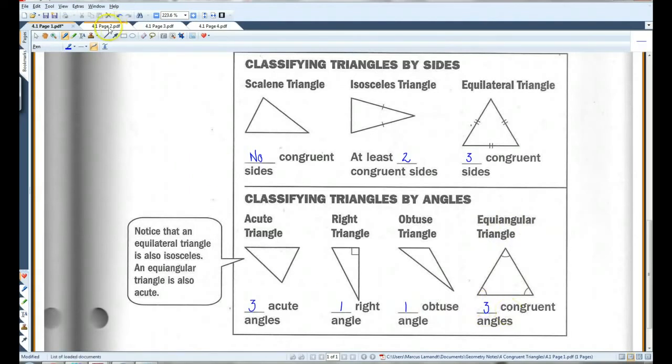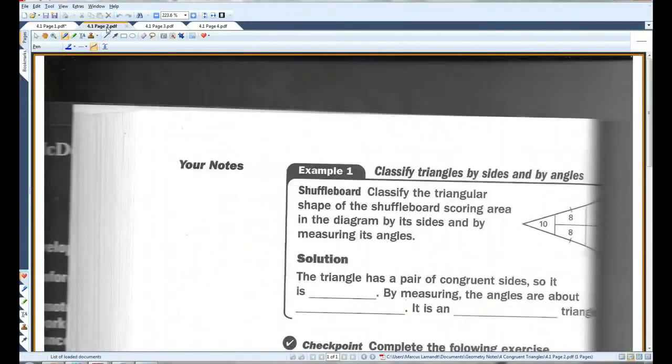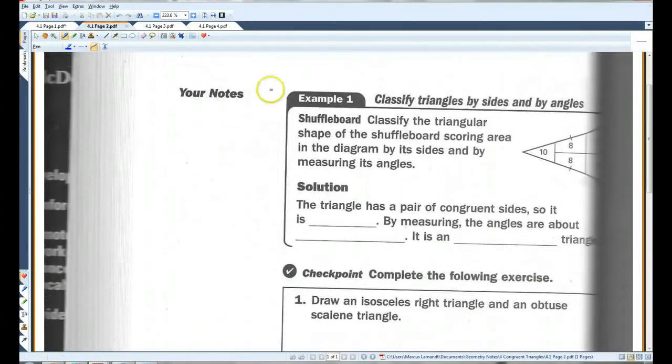All right, let's go on to page 2. I apologize, the diagram got cut off. Let me see if I can draw in what's missing. This is a 7. This is a 7. Okay. Classify the triangular shape of the shuffleboard scoring area in the diagram by its sides and by measuring its angles.